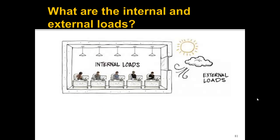Let's think about a building, since that's what we're looking at in utility bill analysis. The external loads include sunlight, wind, and conduction through walls. The internal loads are things like lights, people, computers, projectors — any equipment that uses electricity will also produce heat. The outside temperature at which the internal and external loads balance is called the balance point.